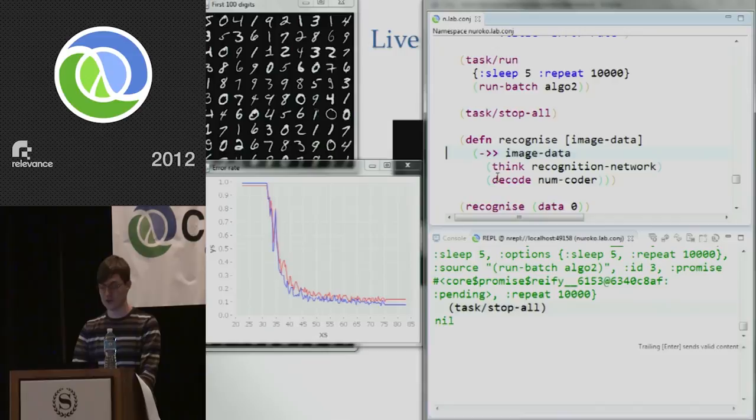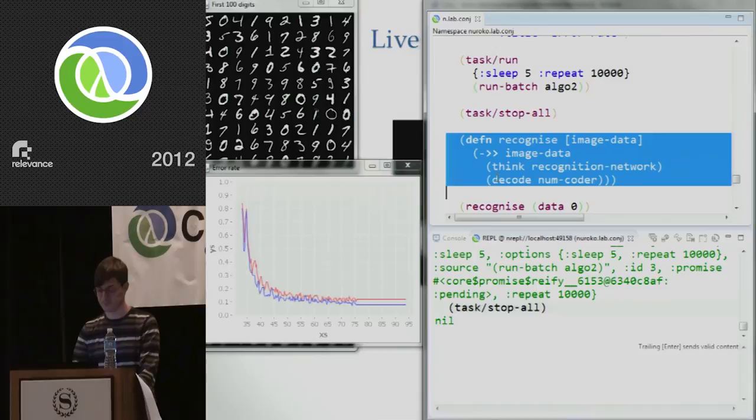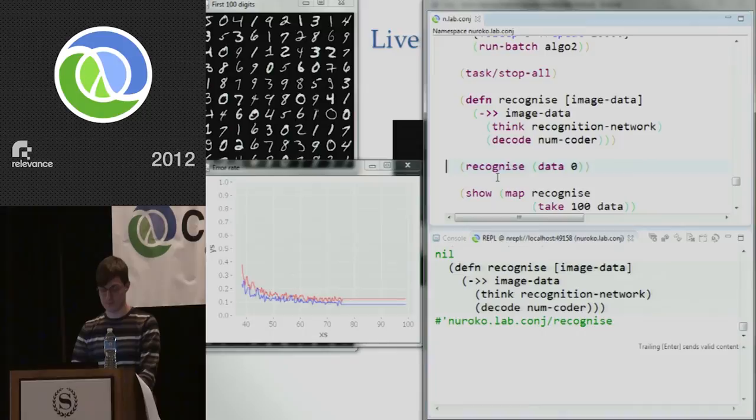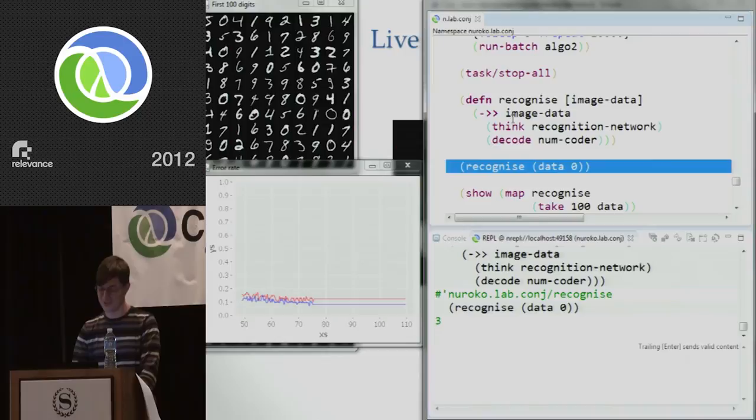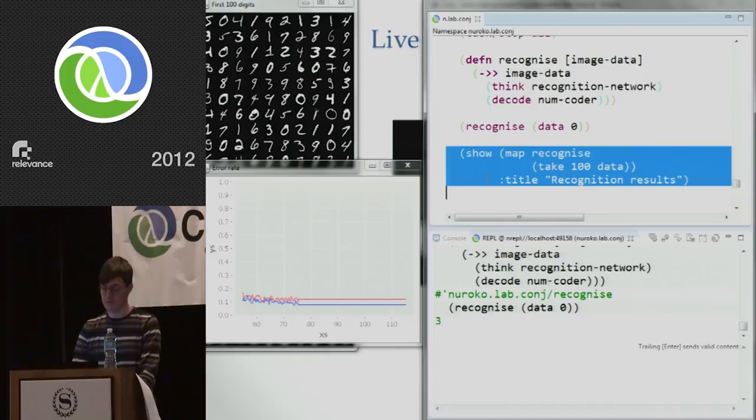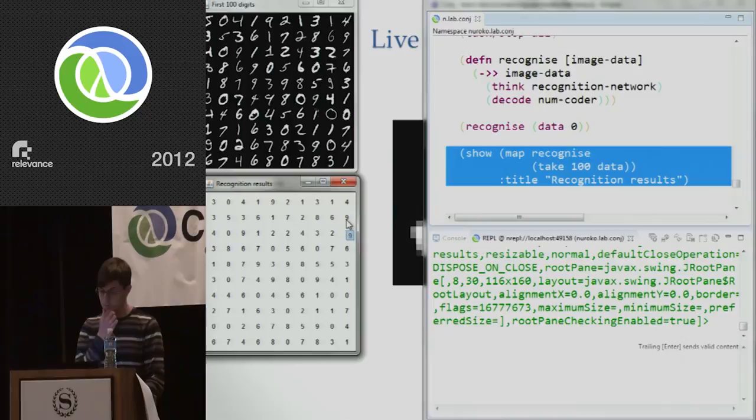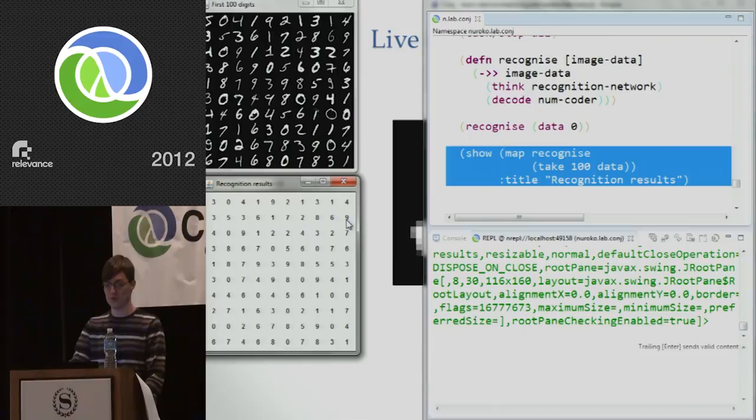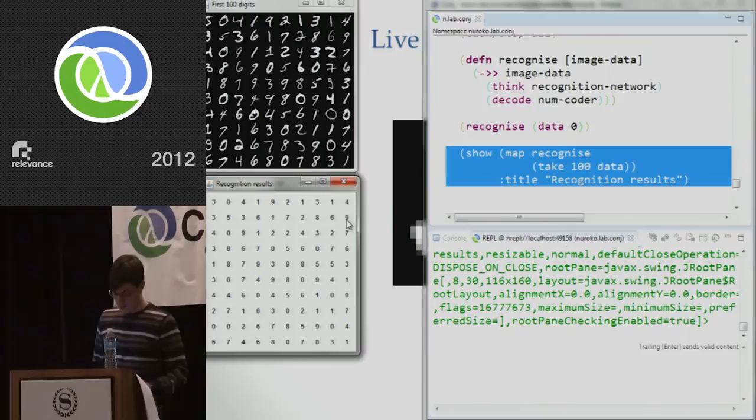And let's see the outputs we get. So we'll just define a recognize function. This is just going to take the image data. It's going to run it through our recognition network and put it through our number coder to decode the output. So the first data item, I think that was a 5. Yeah, it's 5 in the top left. Let's see what it gets. Ah, it gets a 3. So that's one of the ones it's getting wrong. But that's not a very well-written 5. It sort of looks a bit like a 3. But if I map, let's just map that over the first 100 digits. There you are. That's the actual outputs from the network compared to the inputs. And as you can probably see, it's getting most of them right. It's getting about 90% success rate on image recognition. Which isn't state-of-the-art, but it's not bad for a quick five-minute exercise.